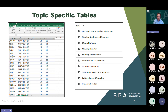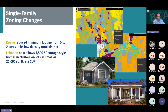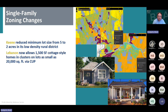Before getting to the tutorial, here are a couple of housing-related zoning changes adopted in 2023. Looking at single-family zoning changes: Keene reduced minimum lot sizes from five to two acres in its low-density rural district. Lebanon adopted a cottage-style development ordinance which allows clusters of up to 16 cottages of 1,500 square feet in all residential districts by conditional use permit, on lots as small as 20,000 square feet on water and sewer, and on lots as small as 40,000 square feet on well or septic. The maps on the following slides are from New Hampshire Housing's Zoning Atlas, showing within each community where those changes apply.